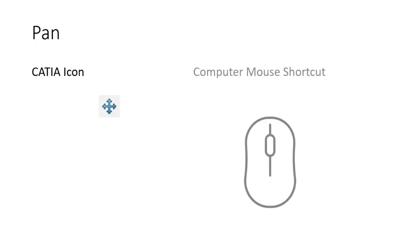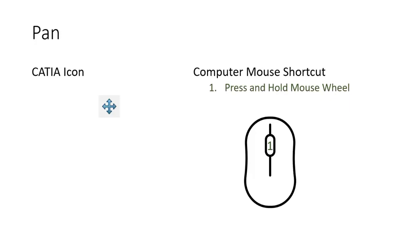Starting off with the pan function. The pan function is going to allow us to move transversally across the viewer. There is the CATIA icon for using that function, and then the computer mouse shortcut we'll go over here. Pretty simple and straightforward — all you have to do is press down and hold your mouse wheel, and that will allow you to pan back and forth with your part.